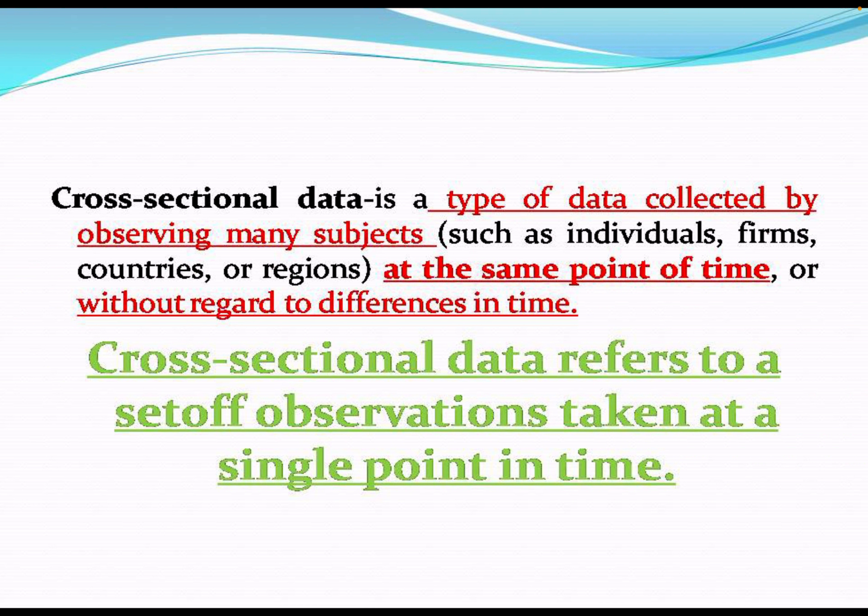Cross-sectional data is basically a type of data collected by observing many subjects — such as individuals, firms, countries, or regions — at the same point in time or with regard to differences in time. Cross-sectional data refers to a set of observations taken at a single point in time, with different parameters observed.